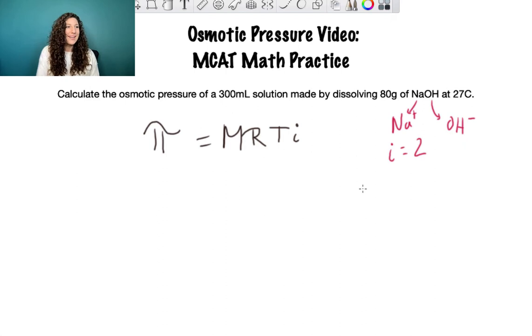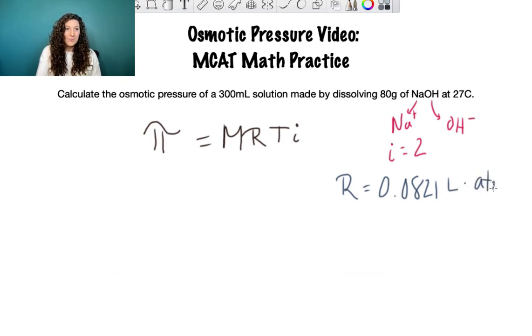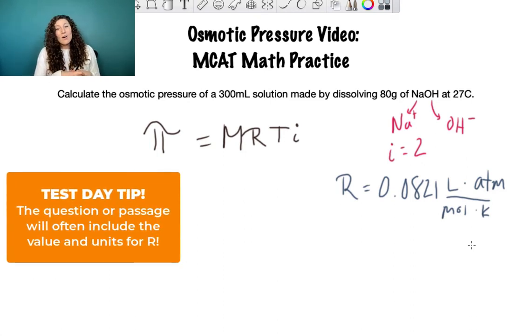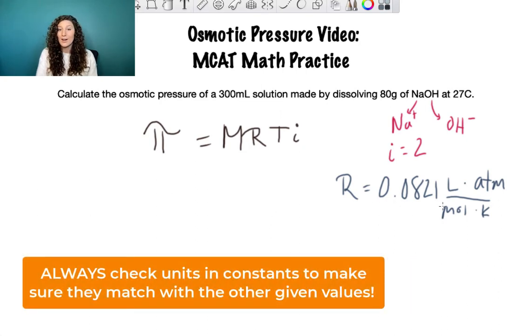Next let's talk about the gas constant R. You're expected to know the value of R for test day which is 0.0821 with units of liters times atmosphere over moles per Kelvin. Like most constants this is designed to help us cancel out units. On test day they often will give you this, so don't be surprised if you see this in parentheses in a question stem. The key thing is we have to use the same units that are in our constant.